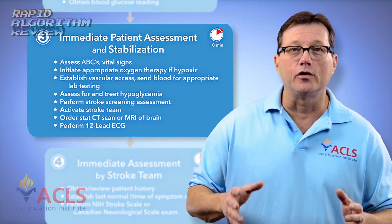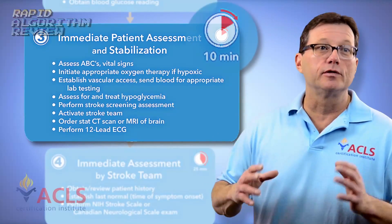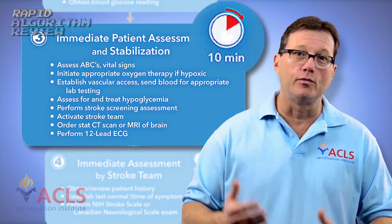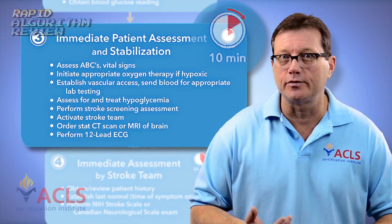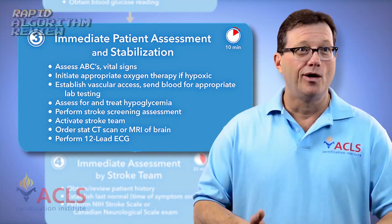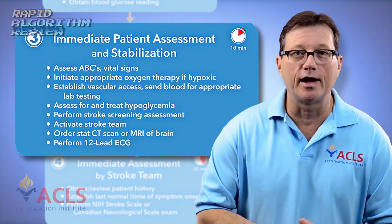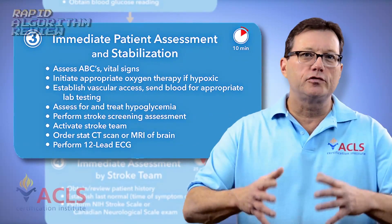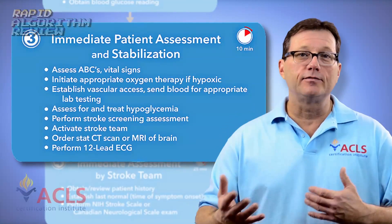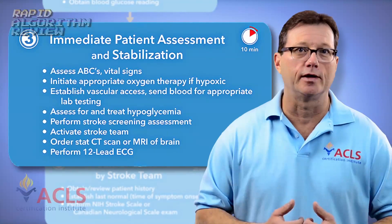If you're in the ER preparing to receive a patient, the suggested timeline from the algorithm is about 10 minutes. When the patient hits the door, within that 10 minutes we want to reassess the patient, make sure they're oxygenated, review their history, order a CAT scan immediately, obtain vascular access, and activate the stroke team if your hospital has one.